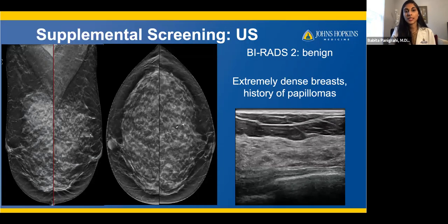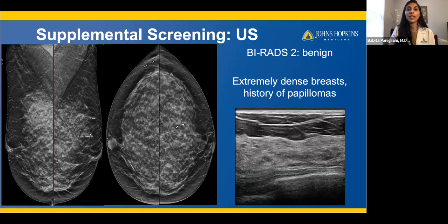This is an example of supplemental screening ultrasound. This patient had extremely dense breasts and a history of papillomas — a high-risk lesion. She decided to get screening ultrasound in conjunction with her mammograms every year. This was a negative exam, BIRADS-2 benign, because she had some biopsy clips in there from prior benign biopsies, but there was nothing new or suspicious on her imaging.